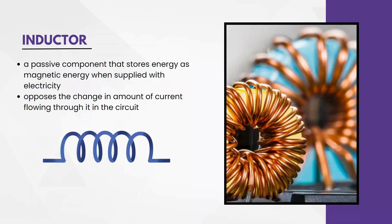Moving ahead, we have an inductor. If you take any core and wind it up with some wires that have conductive properties, then it will behave as an inductor. This is the symbol of an inductor which we represent in theoretical circuits, and what you see here is a real-time inductor. Again, an inductor is a passive component and it will store energy in the form of magnetic energy when we supply it with electricity. We have already learned that it will oppose the rate of change of current, or the change in the amount of current that flows in a circuit.